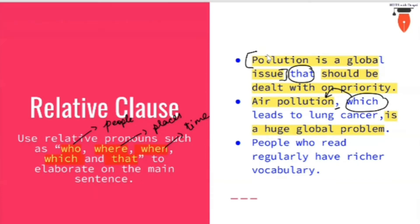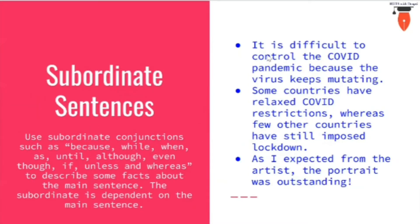The third example: 'People who read regularly have a richer vocabulary.' People have richer vocabulary — but which people? People who read regularly. Here we have used 'who' for people.